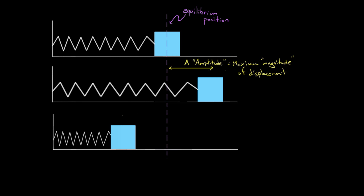So we can draw that over here. This amplitude here would also be the amplitude on this side, because we're just talking about the maximum magnitude of displacement. It's gonna get displaced equally on either side of the equilibrium position, and that maximum amount is called the amplitude.